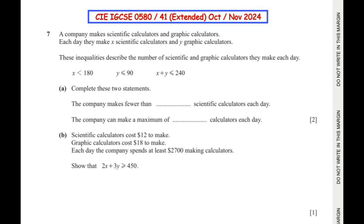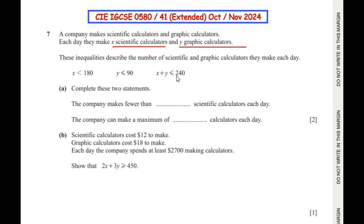A company makes scientific calculators and graphic calculators. Each day they make x scientific calculators and y graphic calculators. These inequalities describe the numbers they make each day: x is less than 180, y is less than or equal to 90, and x plus y is less than or equal to 240.